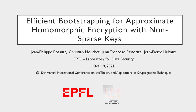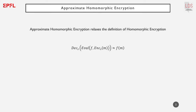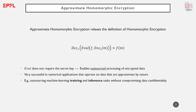Like traditional homomorphic encryption, approximate homomorphic encryption enables computation to be performed over encrypted data, however with a relaxed correctness property that the decryption procedure can output an approximate result. These schemes have been very successful in securing numerical applications for which the underlying data is approximate by nature. For example, machine learning training and inference tasks can be securely outsourced to a third party under homomorphic encryption without endangering the confidentiality of the data.